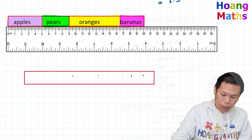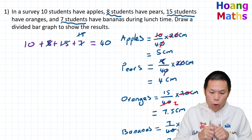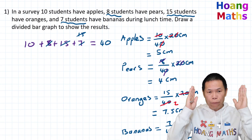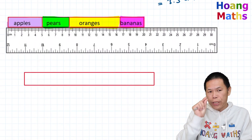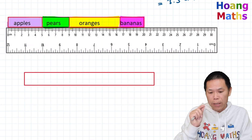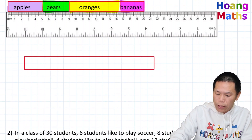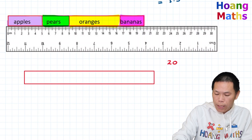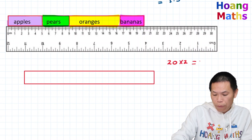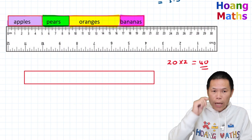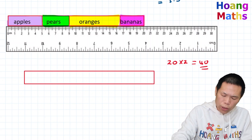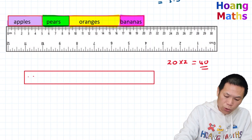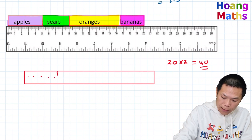Now, with 20 grids representing 40 students, each grid represents 2 students. For apples there are 10 students, so 10 divided by 2 is 5 — we shade 1, 2, 3, 4, 5 grids. That section is apples.